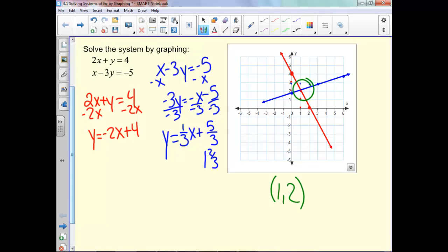And we do want to check this to make sure that this is our solution. And so to check this, what we need to do is just plug this point into both equations and make sure it works. So 2 times 1 plus 2 equals 4. And let's check. 2 times 1 is 2, plus 2, so 4 equals 4.